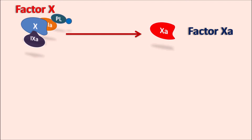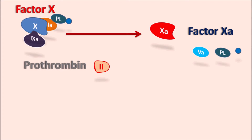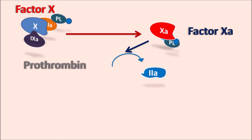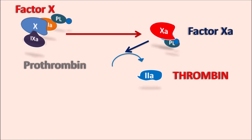Factor Xa targets Factor 2, also called prothrombin. Prothrombin is activated by Factor Xa, assisted by Factor 5a, phospholipids, and calcium. These three bind to Factor Xa, which acts on prothrombin such that prothrombin is converted to thrombin (Factor 2a). In this conversion, prothrombin binds to Factor Xa and is released as Factor 2a — thrombin.